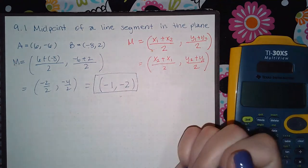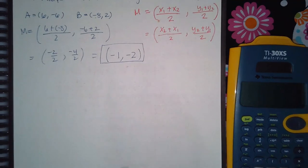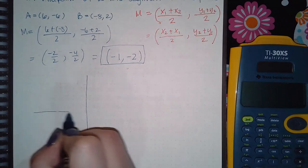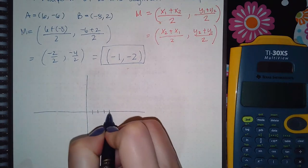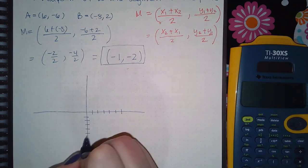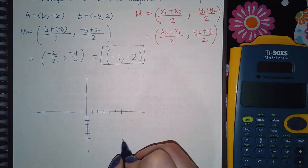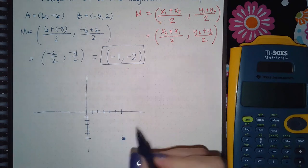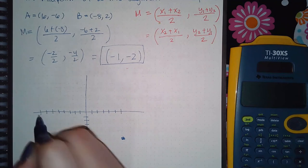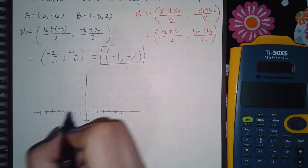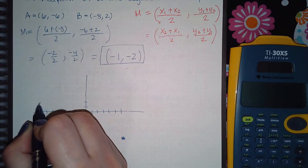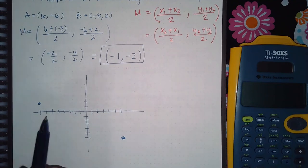So essentially what you're doing is—you have 1, 2, 3, 4, 5, 6... 1, 2, 3, 4, 5, 6... and then you have 1, 2, 3, 4, 5, 6, 7, 8 and positive 2. Basically what's happening is there's a line here.